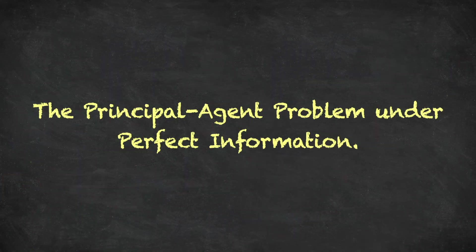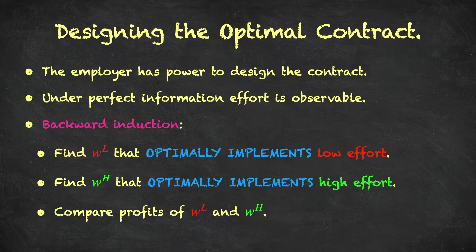Let's consider the principal-agent problem under perfect information. By perfect information we mean the employer is able to observe the level of effort that the employee exerts and is able to base the contract on that level of effort. The employer has monopoly power, so they're not going to worry about competitive forces and will design a contract to maximize their own profit.